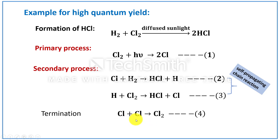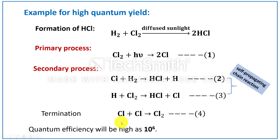Chlorine atoms recombine to form chlorine molecule at the walls of the container. Thus, by the absorption of one quantum of energy, a large number of hydrogen chloride molecules will be formed, and the quantum efficiency of this reaction will be high — on the order of 10 to the power of 6.